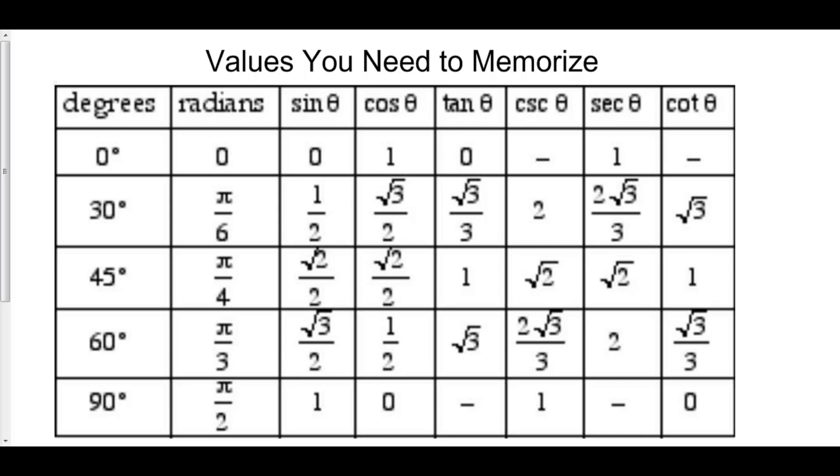Cotangent is defined as 1 over tangent. So that would be cosine over sine. And here's everything that you have to know about basic trig. You have to know what the graphs look like. You have to know these particular angles of sine and cosine, and therefore those particular angles of tan, cosecant, secant, and cotangent, which you can easily get just from these.